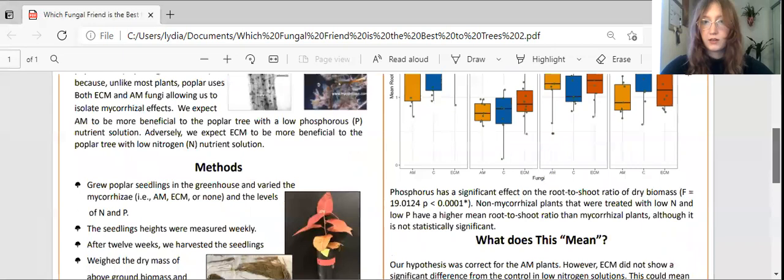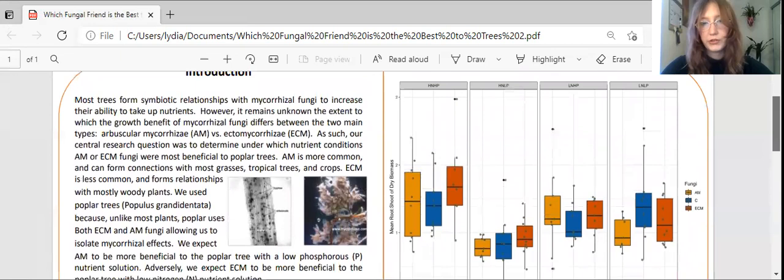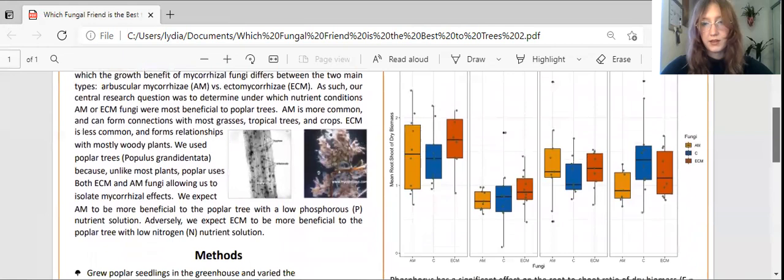The graph in the top right is mean root to shoot dry biomass of the plants with the type of fungi that they were inoculated with at the x-axis of the chart.